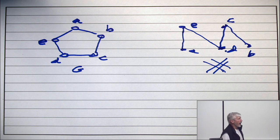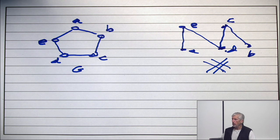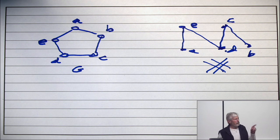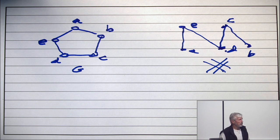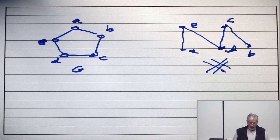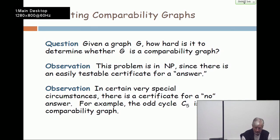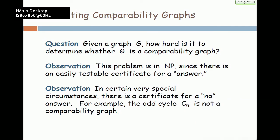So, if the graph is a C5 with no other edges, then the graph is not a comparability graph. And, in fact, if it contains a C5 as an induced subgraph, it's not a comparability graph. But, what happens if it doesn't? Then, are we stuck in the same situation as before? Is this an NP-complete problem?